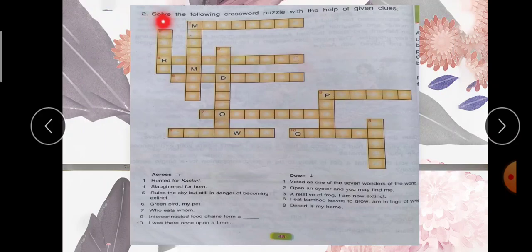Question number 2 is, solve the following crossword puzzle with the help of given clues. Ki niche jo hai crossword puzzle di gayi hai, aapne isko solve karna hai with the help of clues. To clues diye gaye hain, inki help se aapne jo ye crossword puzzle hai, isko solve karna hai. To ye dekhiye across, across hota hai is tarah se, aur down hota hai niche ki taraf. To aapne clues ki help se is crossword puzzle ko complete karna hai.